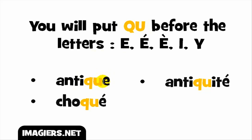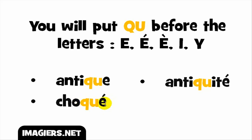First example: the vowel E with QU before it gives you the /k/ sound, and the full word is antique — antique. Another example: E accent aigu, which is the sound É, also gives you the /k/ sound with QU, and the full word is choqué — choqué.